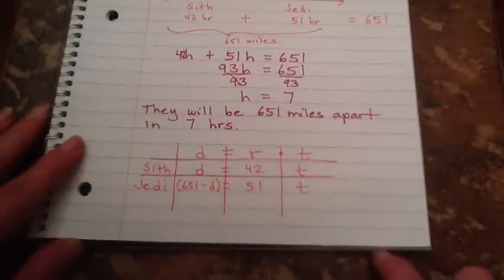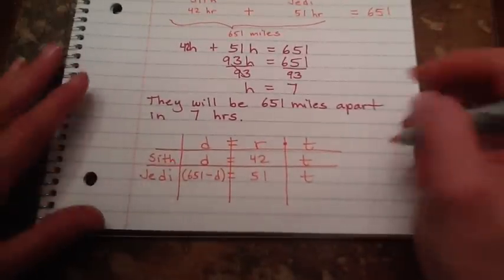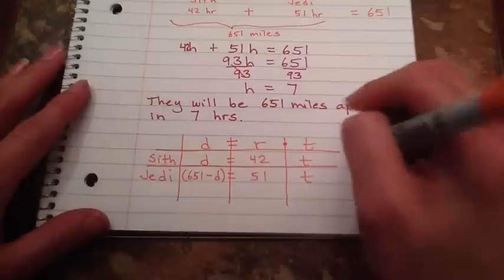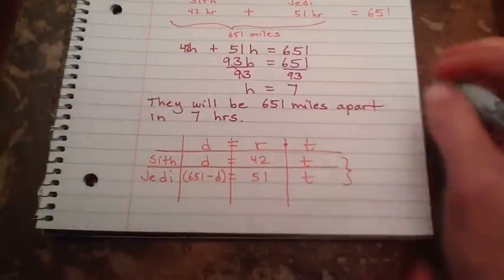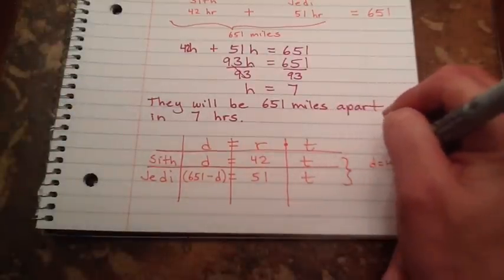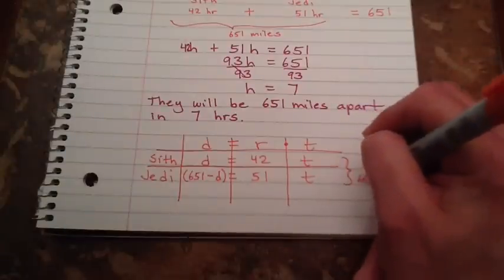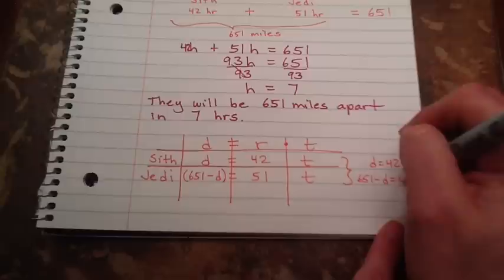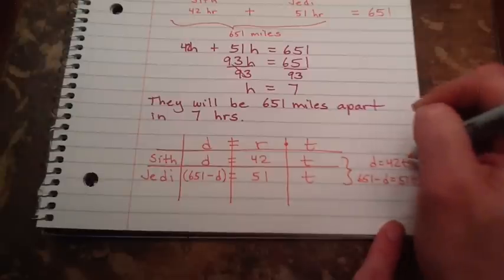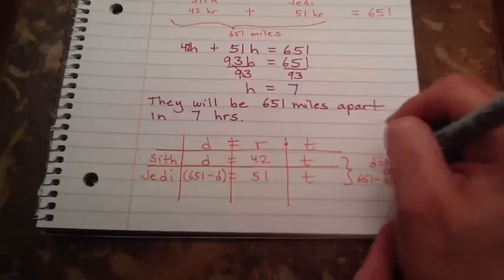From here I'm not going to solve the whole thing for you. But I'm going to help you set up your equations. You have your two equations. Your two equations are D equals 42T. And 651 minus D equals 51T. And this is set up for substitution.